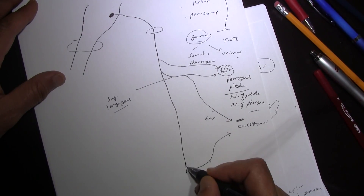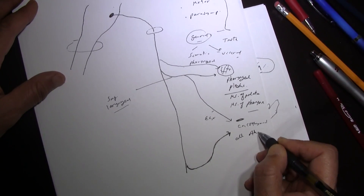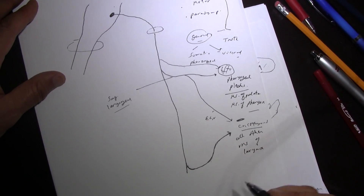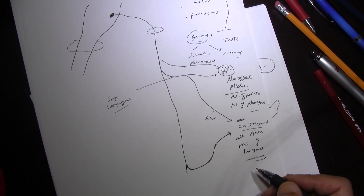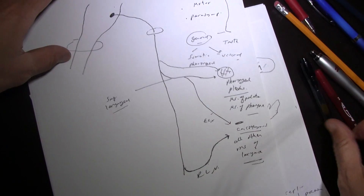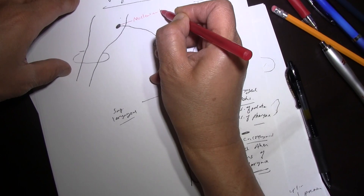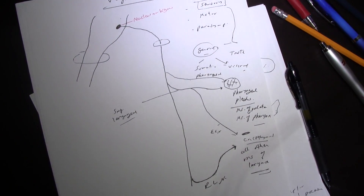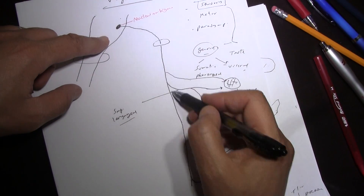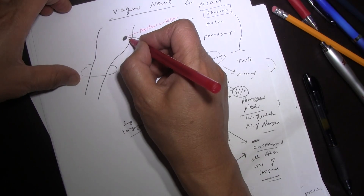The recurrent laryngeal nerve supplies all other muscles of the larynx — all laryngeal muscles except the cricothyroid. The nucleus ambiguus is responsible for all the motor fibers coming from the vagus.